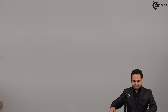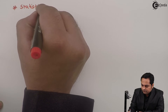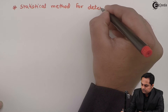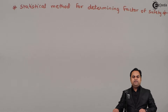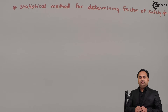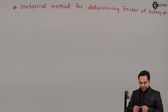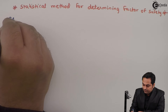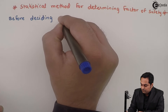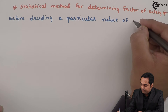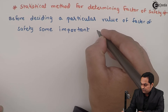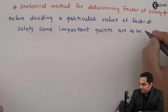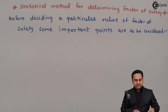Hello friends, in this video we are going to see some of the methods before we design the factor of safety. So, statistical method for determining the factor of safety — before determining the factor of safety for a material, some important points need to be considered.